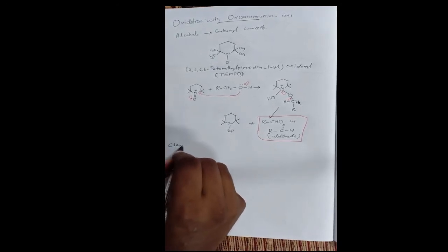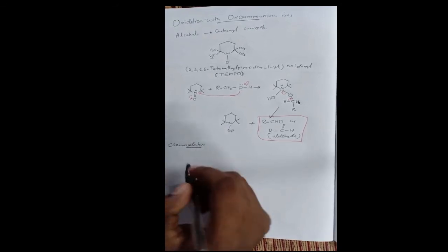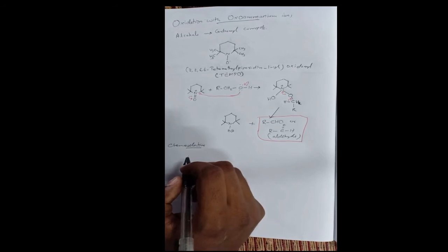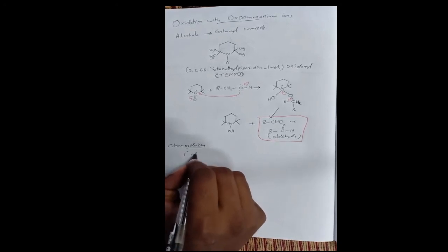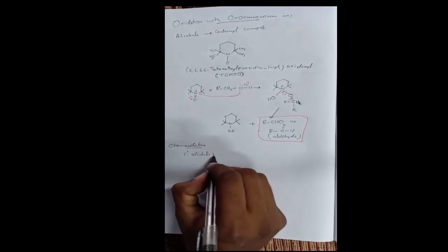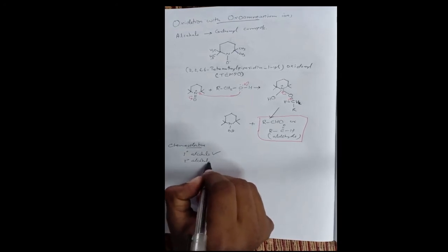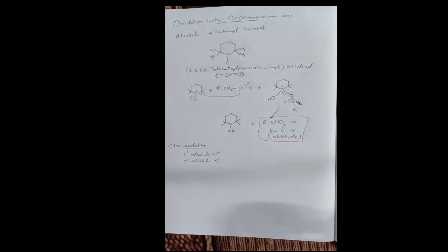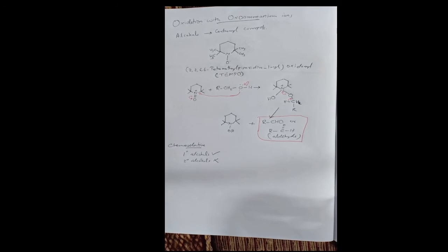This reaction shows chemoselectivity. The TEMPO reagent selectively oxidizes primary alcohols in the presence of secondary alcohols. It oxidizes the primary hydroxyl group but does not oxidize the secondary hydroxyl group. This is why it is called a chemoselective reaction.